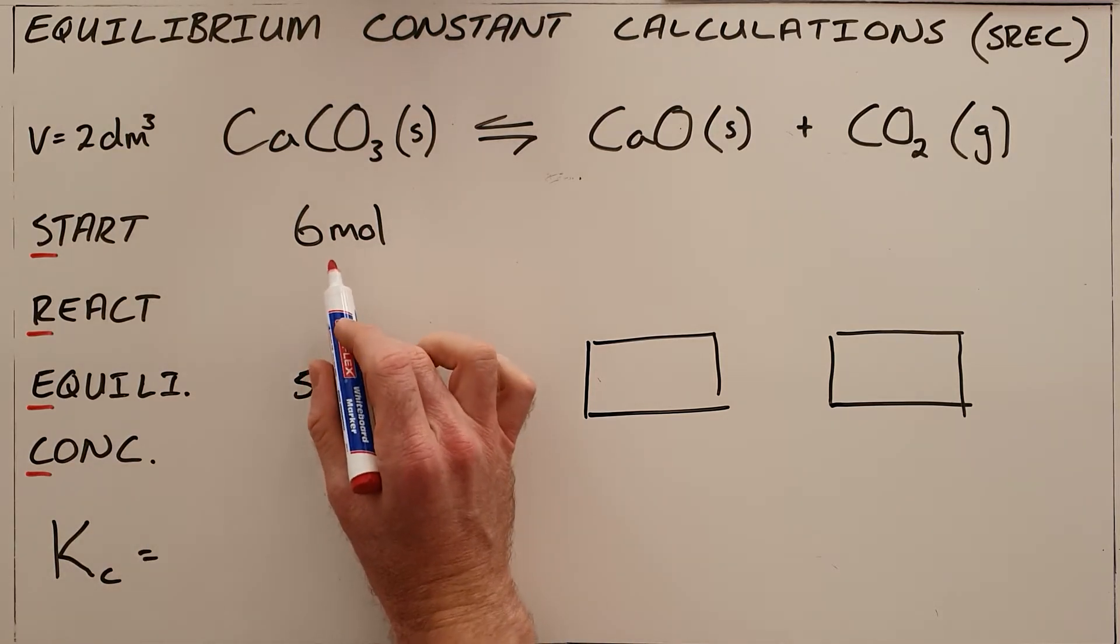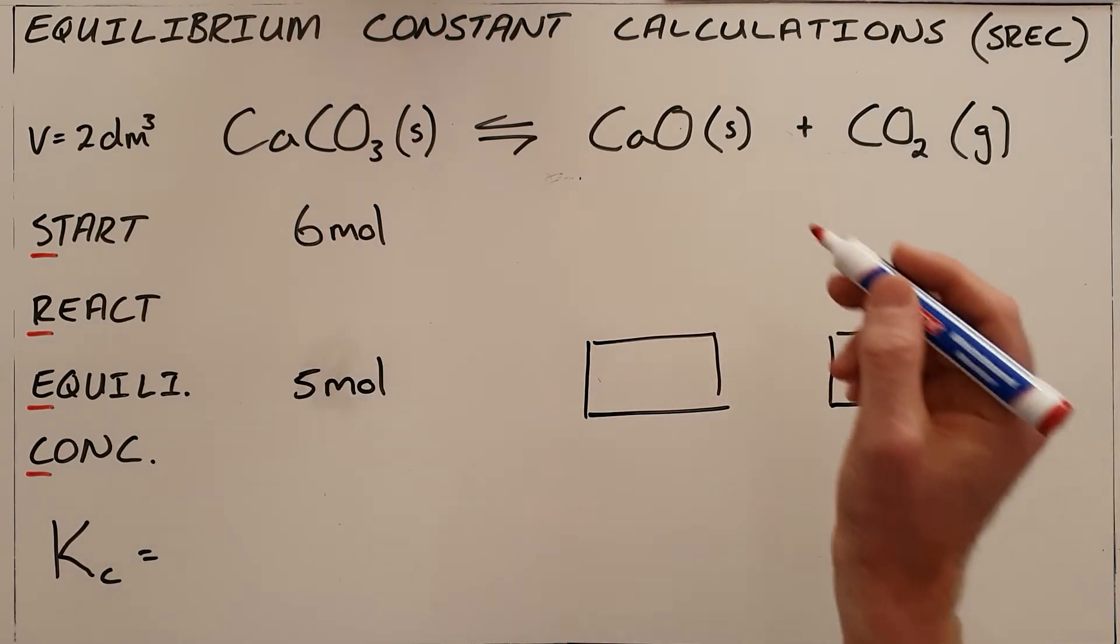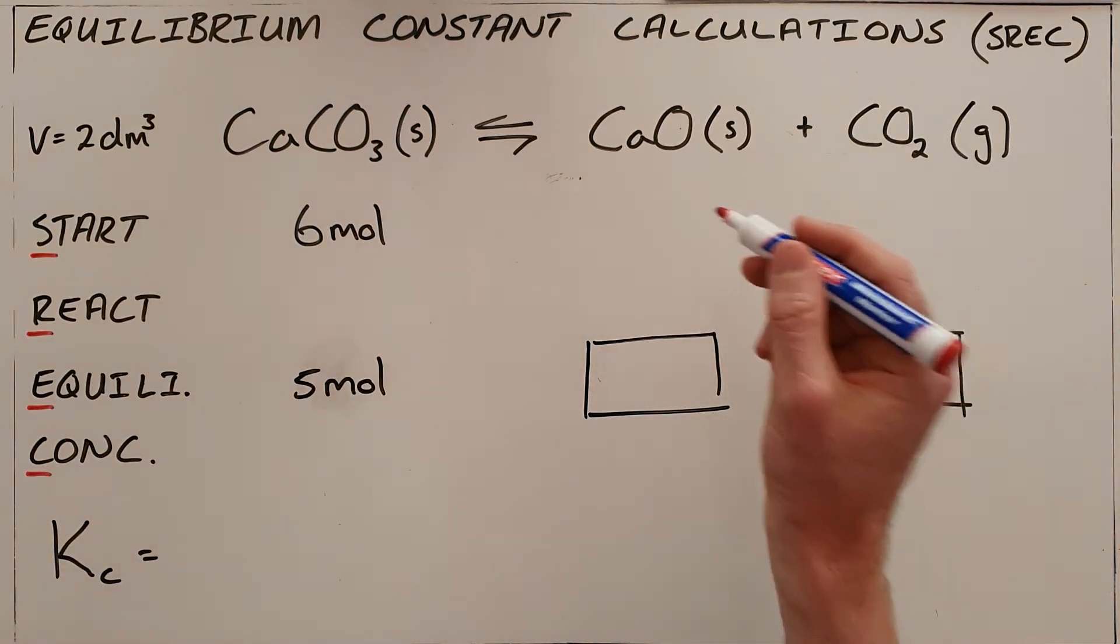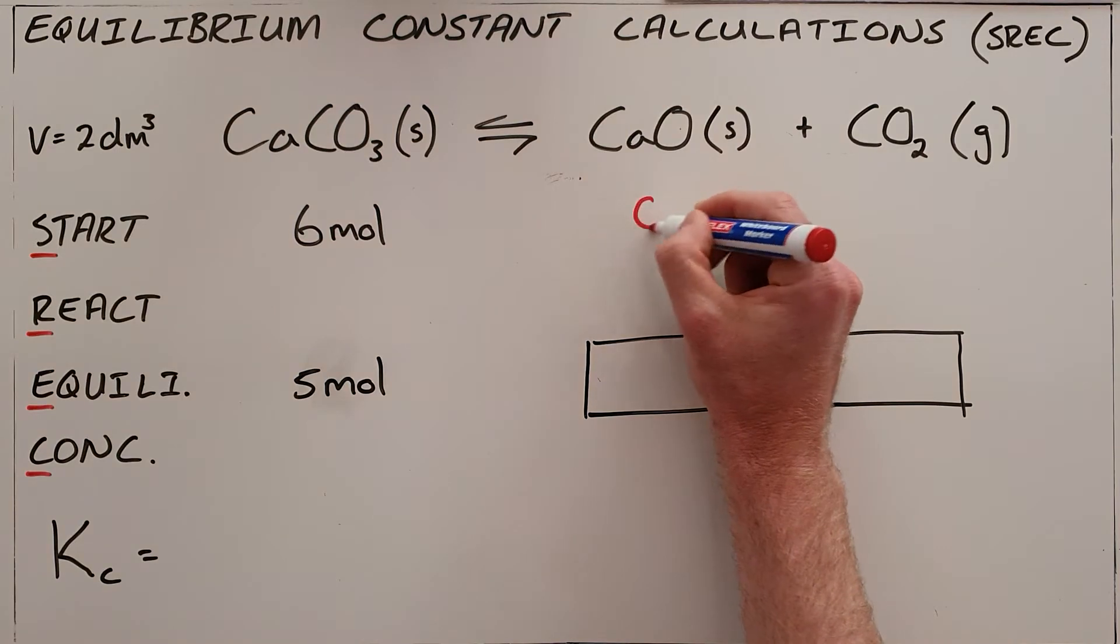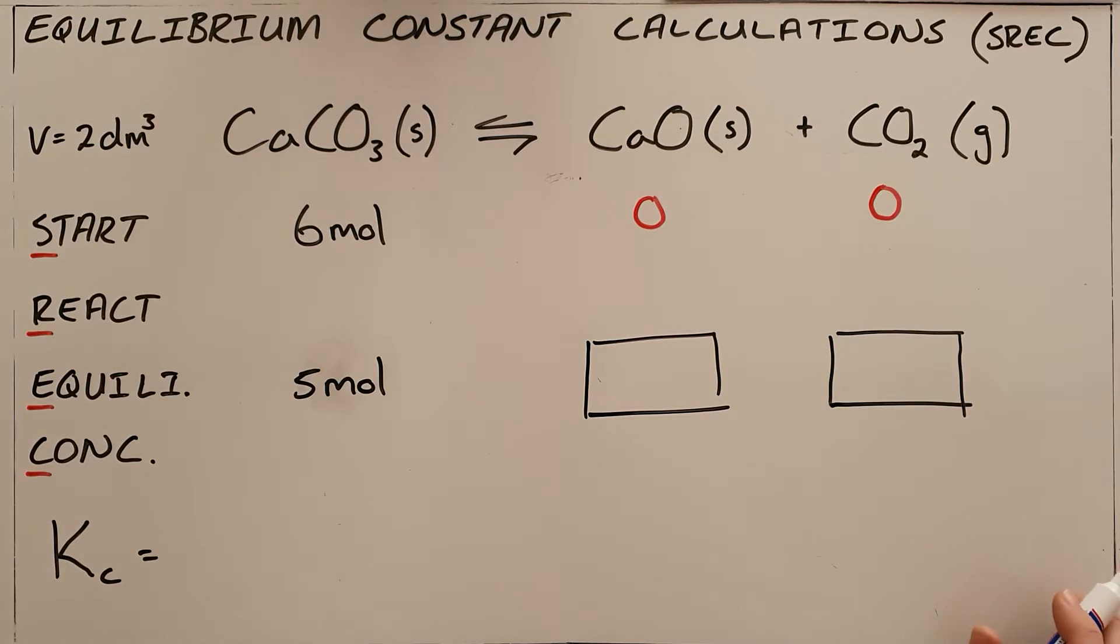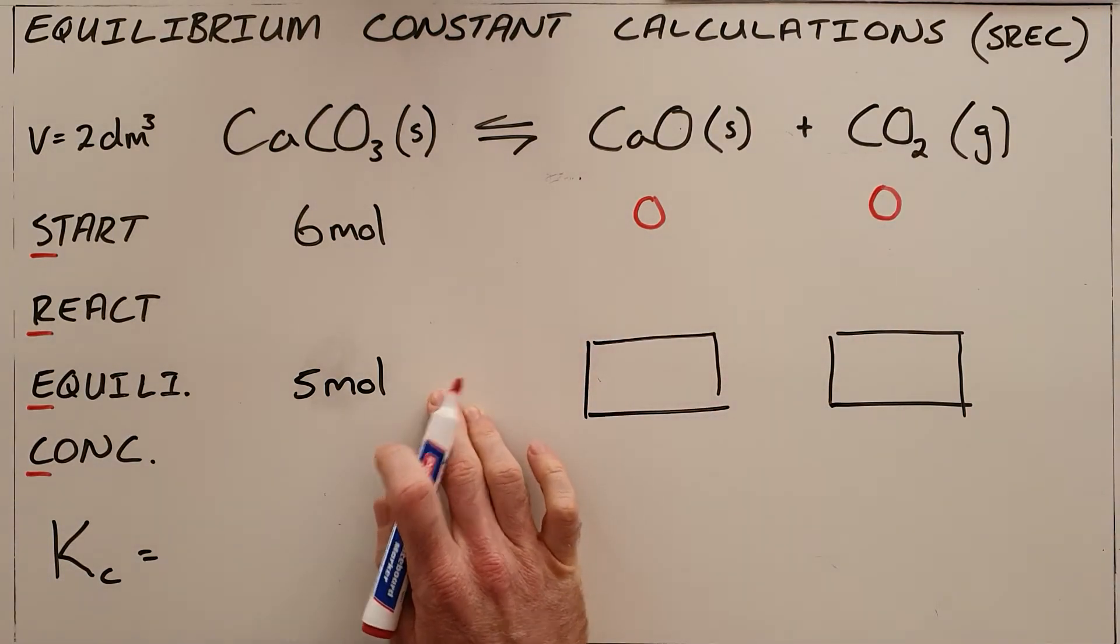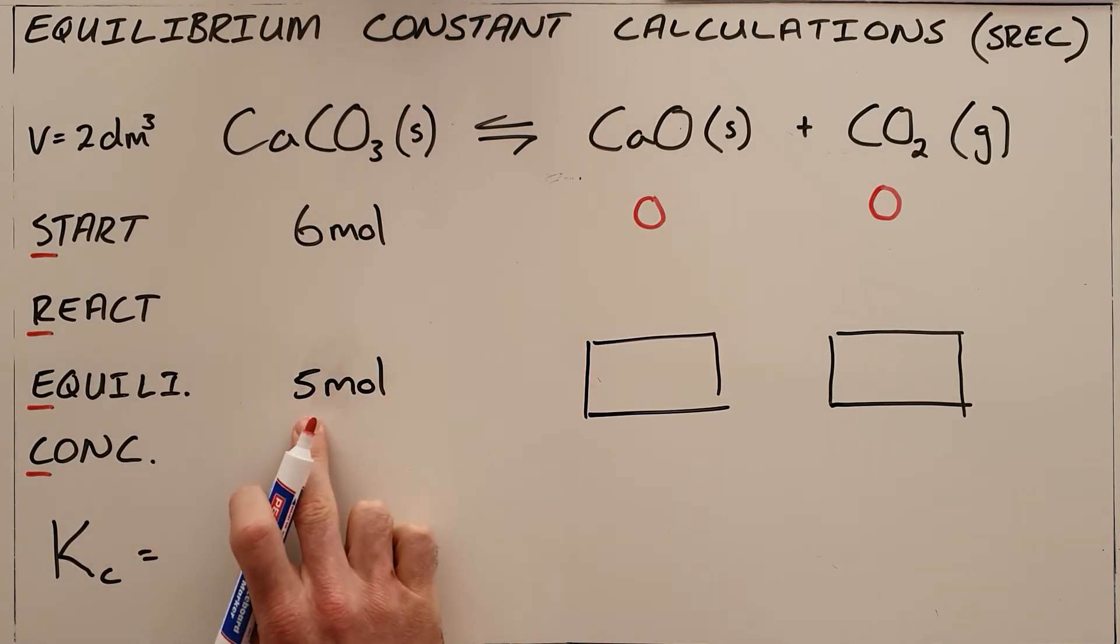So in this example here, we were told that we start by placing 6 moles of calcium carbonate in a closed or sealed or isolated container, which means that we start with 0 calcium oxide and 0 carbon dioxide. The question then goes on to say that at equilibrium we find that we have 5 moles of calcium carbonate.